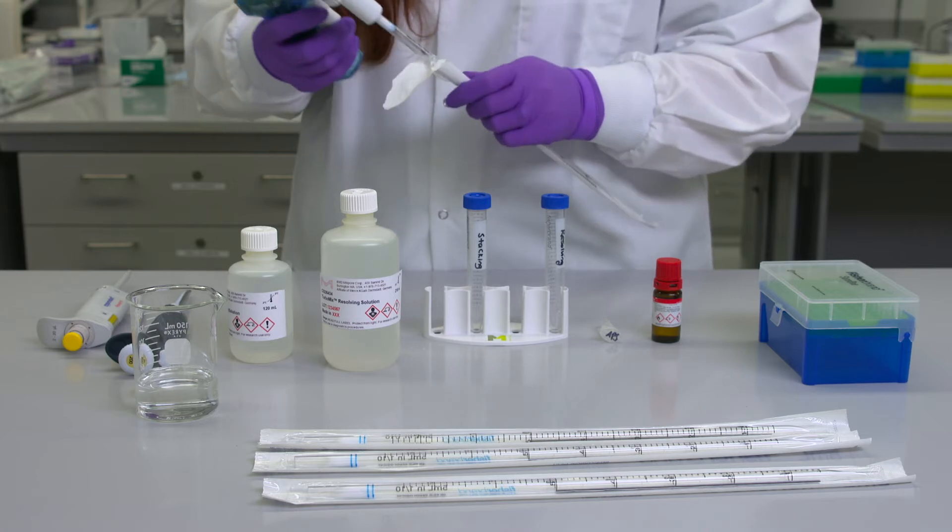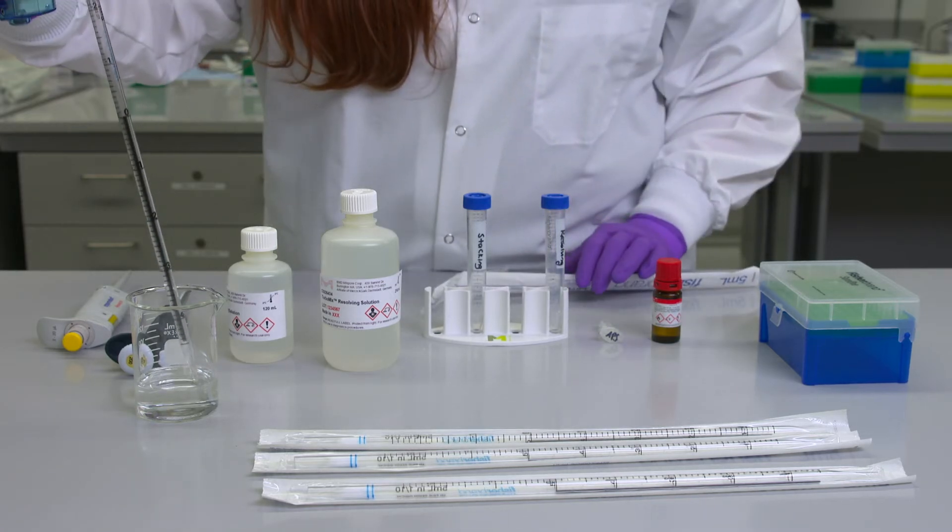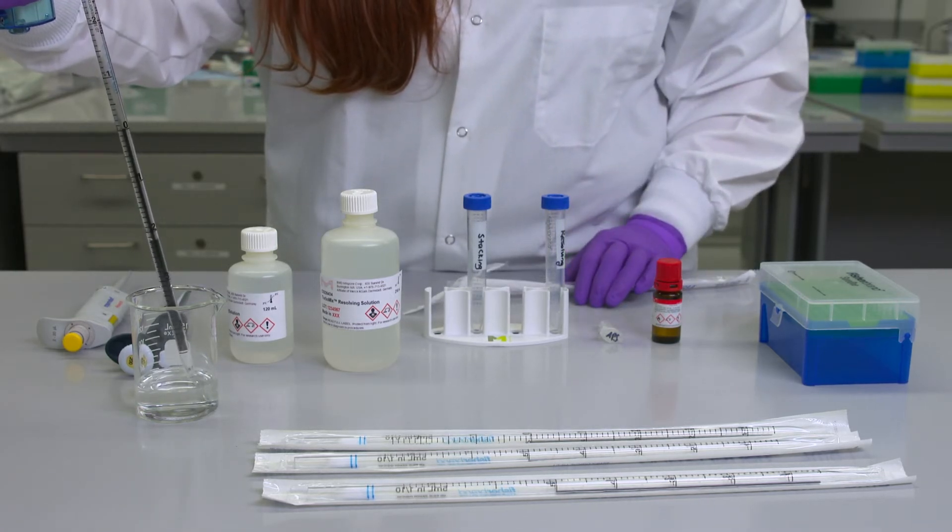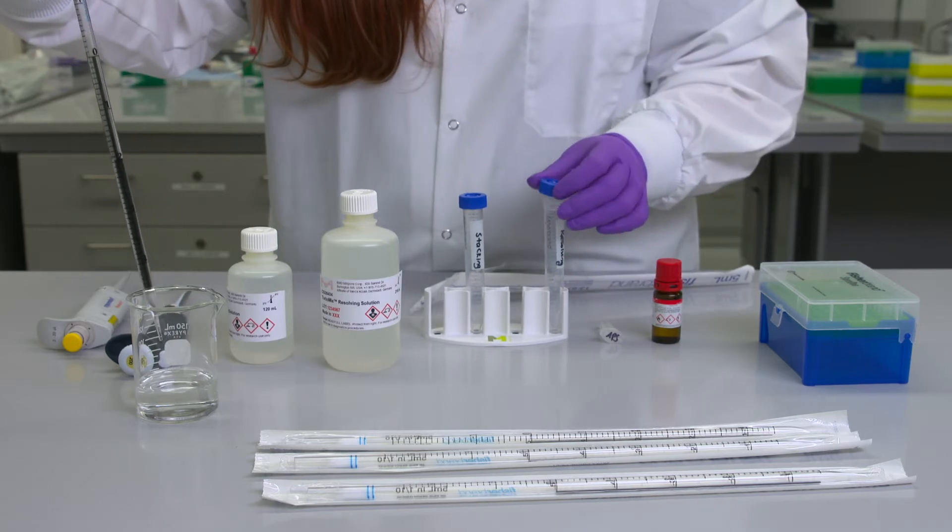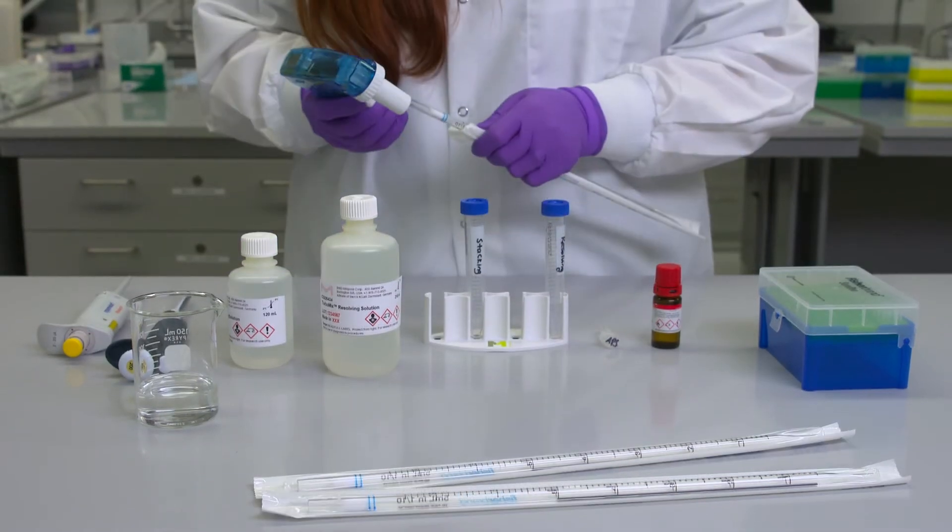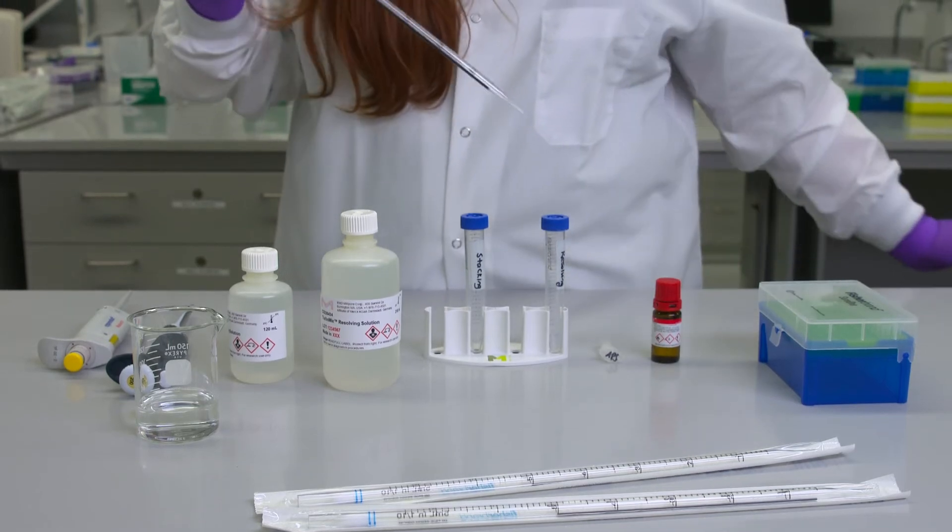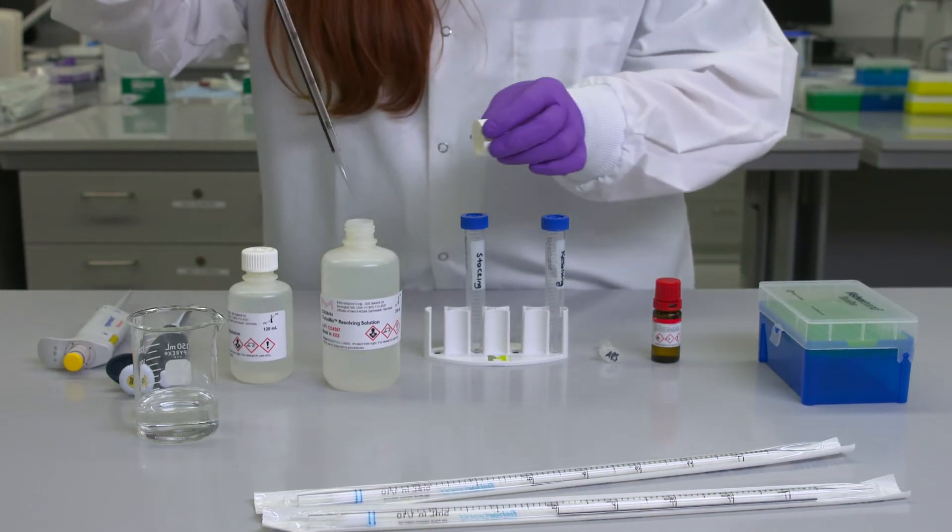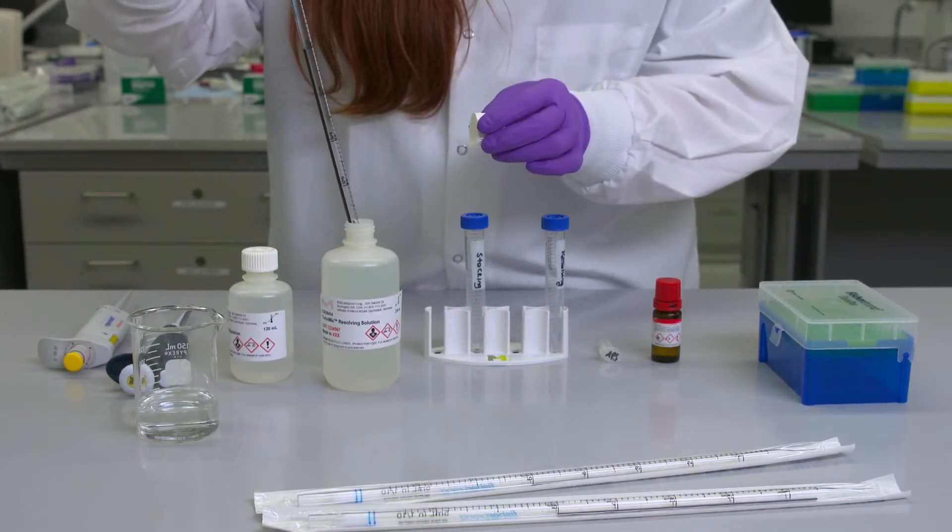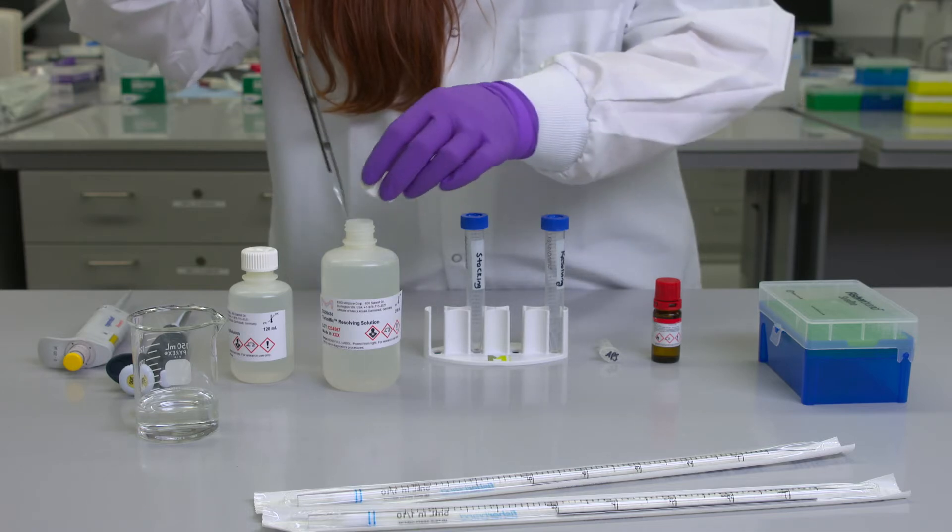The resolving solution is provided at 20% acrylamide and can be diluted with deionized water to your desired gel percentage between 8 and 15%. So to make a 10% gel I'll add 3 milliliters of resolving solution to 3 milliliters of deionized water.